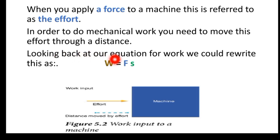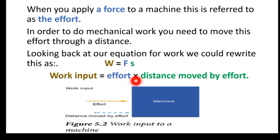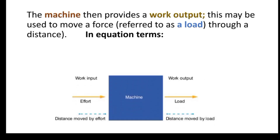Looking back at our equation for work, we could rewrite this as: Work = Force × Distance. Work input is equal to effort times distance moved by effort. The machine then provides a work output, which may be used to move a force referred to as a load through a distance.